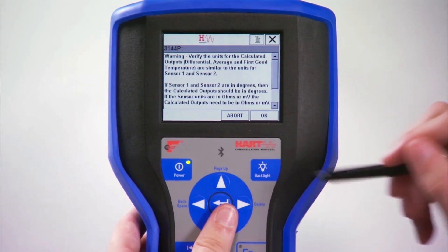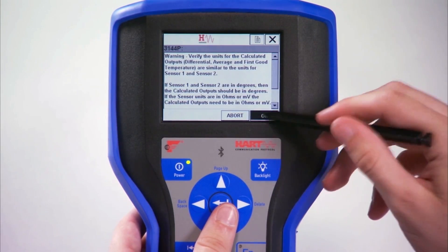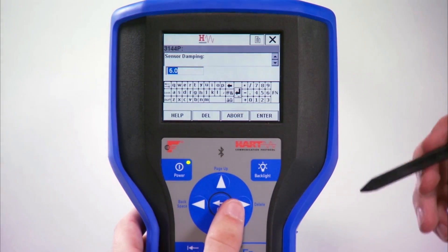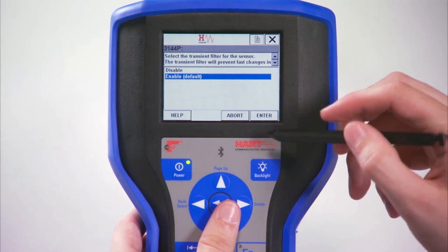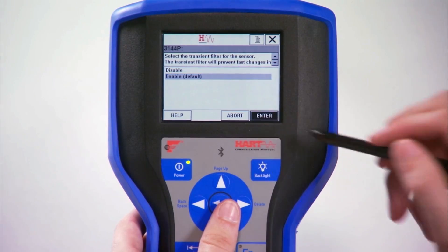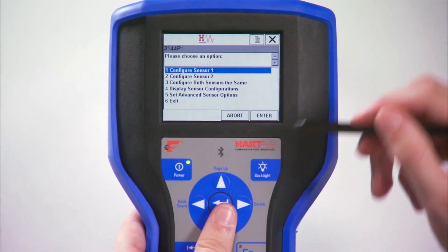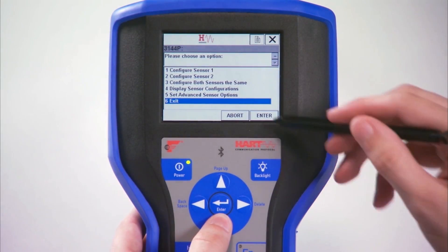Select your preferred engineering units and press OK on the following warning screen. Enter your preferred damping value and then select if you want the transient filter enabled. The sensor should now be correctly configured.